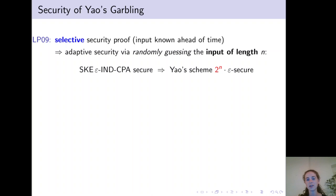Adaptive security then follows via randomly guessing the input, however, this involves a loss in security that is exponential in the input size.